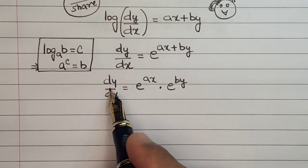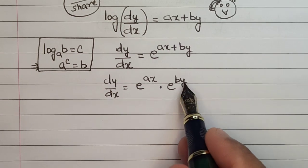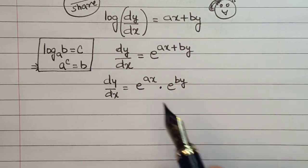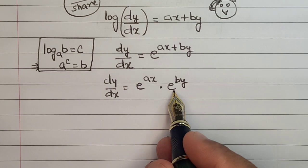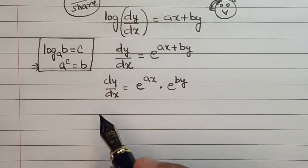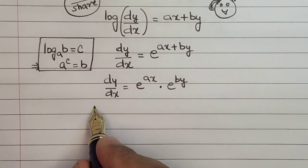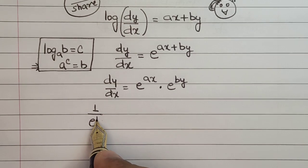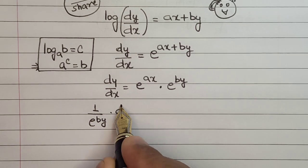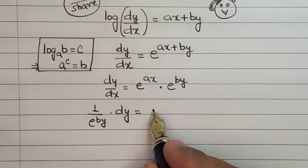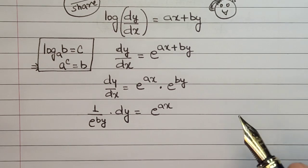Since dy is already here, let me bring e^(by) on the left-hand side. As soon as this reaches the left-hand side, the power is reversed. So e^(-by) dy = e^(ax) dx.